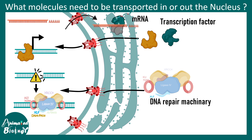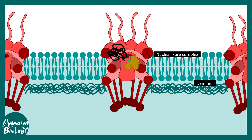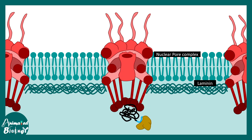Sometimes mRNAs need to be exported out of the nucleus as well, so nuclear transport is super important. The main player — NLS — is detected by a protein called importin. As the name suggests, importin imports the protein into the nucleus. It interacts with the nuclear pore complex and, through a conformational change, allows the protein to enter.